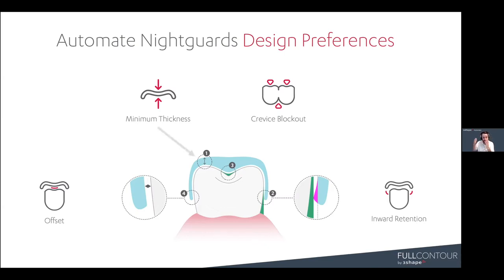Minimum thickness is straightforward — it's the thickness from the occlusal surface of the upper arch to the lower arch: how thick is that Nightguard to the opposing? Inward retention controls how much it's grabbing under the height of contour, that retention into the undercut areas.